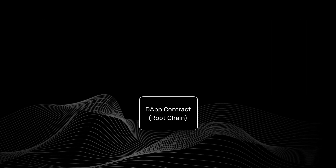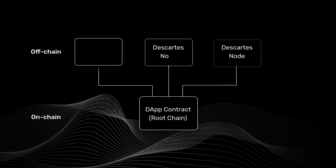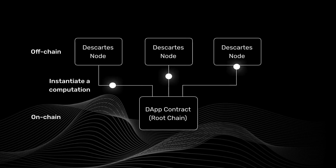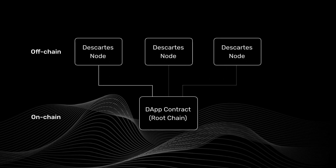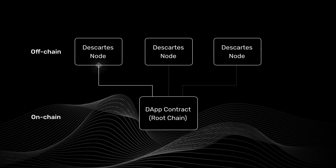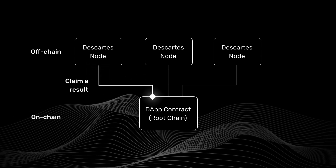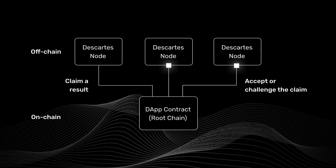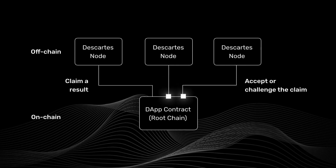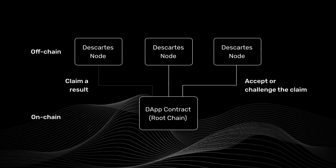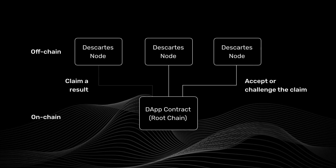At runtime, when your dApp requests a computation, all Descartes nodes involved in the dApp run the specified computation off-chain. A claimer node presents the result on-chain; the other nodes validate the claim. If the claimer maliciously submits an incorrect result, any honest node can initiate a dispute and infallibly enforce the correct result on the blockchain. This is all done automatically by Descartes and abstracted away from the developer.